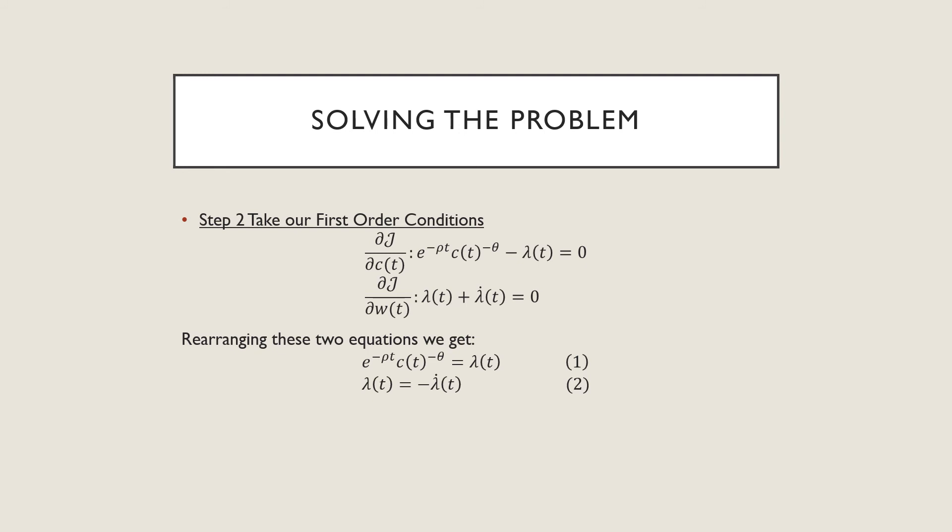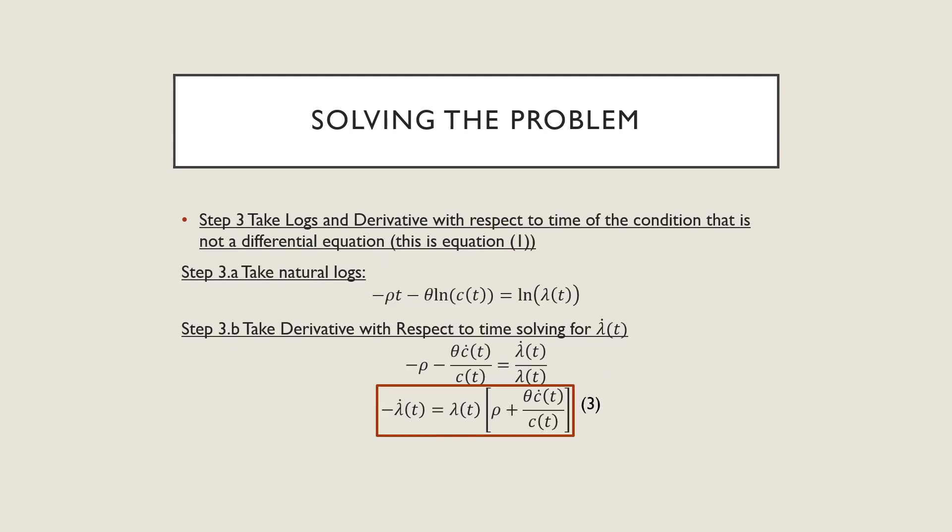So after rearranging, we're going to take the logs and derivative with respect to time of the condition that does not have a differential equation in it. This is equation number one. Taking our natural logs of both sides and then taking the derivative with respect to time, we get this result, where negative lambda dot t equals lambda t times rho plus theta times c dot t all over c.